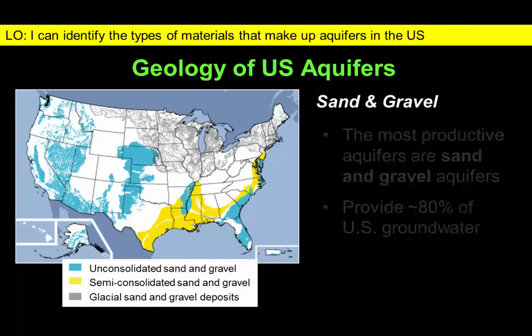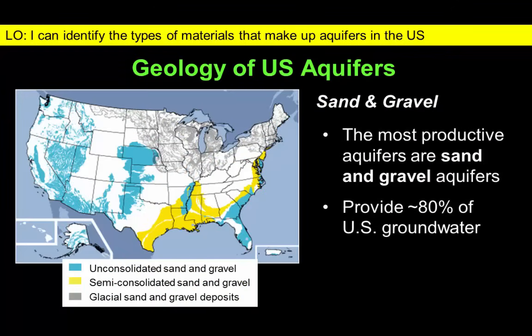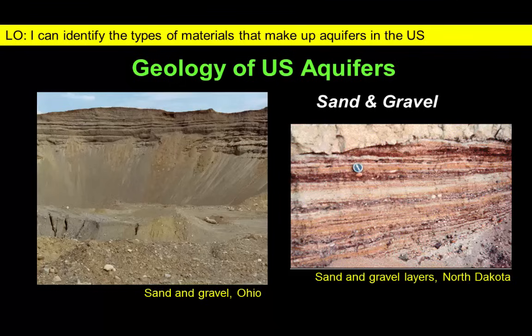The most common unconfined aquifers are piles of sand and gravel, typically found within 100 feet or less of the surface. These shallow aquifers can provide an abundant supply of groundwater, but may also be susceptible to contamination. Many of these sand and gravel deposits were left behind by glaciers that covered the northern states during the last Ice Age.